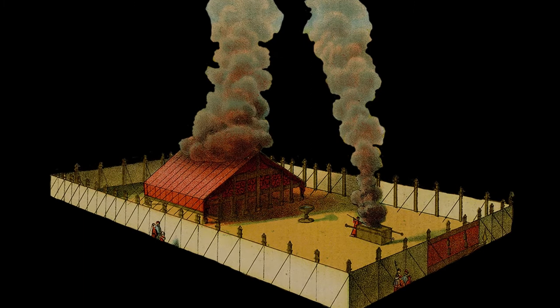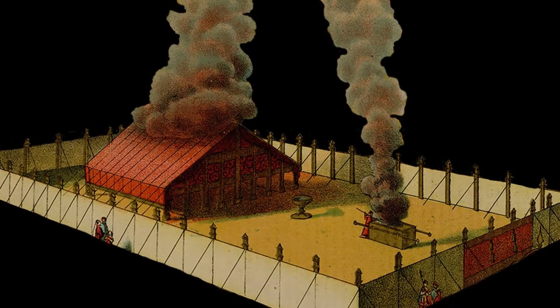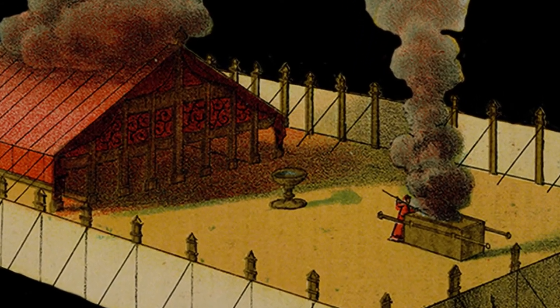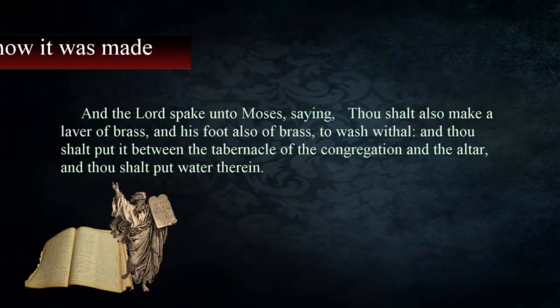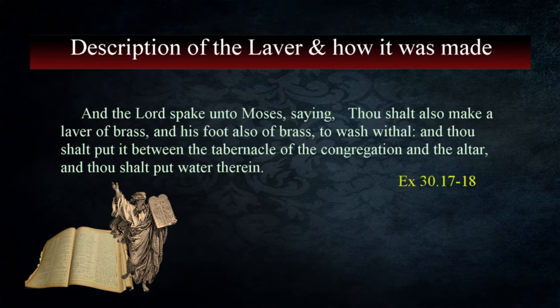As with some other objects such as the lamp stand, we have limited information to understand what the laver looked like or how it was actually made. Surveying available references in Exodus, we can form a partial picture. The first comes from Exodus 30:17-18: 'The Lord spake unto Moses saying, thou shalt also make a laver of brass and his foot also of brass to wash with, and thou shalt put it between the tabernacle of the congregation and the altar, and thou shalt put water therein.' All we have here is God's command to make it and fill it.